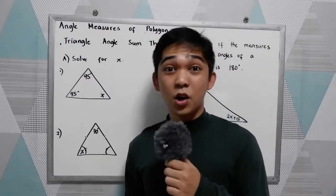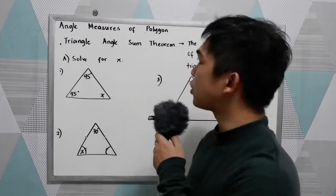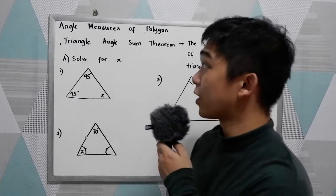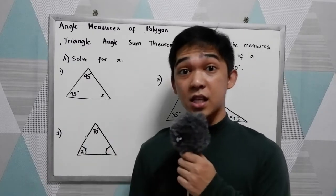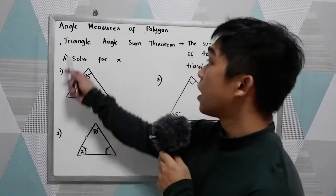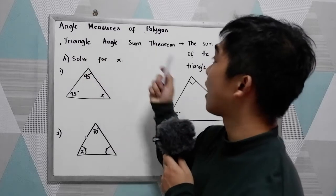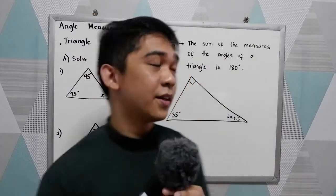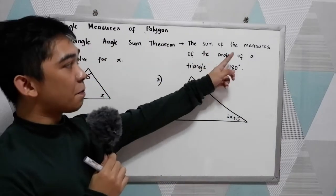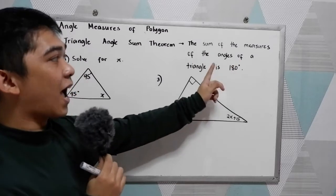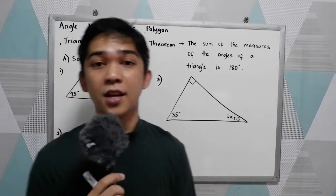Good day everyone, today we're going to discuss the angle measures of polygons. So we have our first theorem: the Triangle Angle Sum Theorem. The sum of the measures of the angles of a triangle is equal to 180.